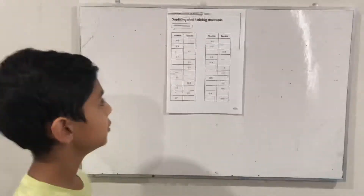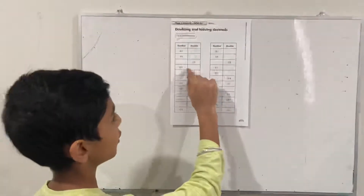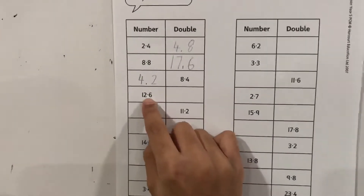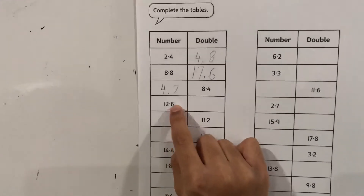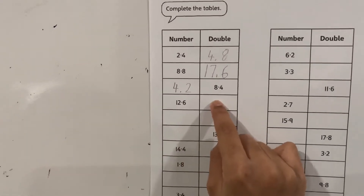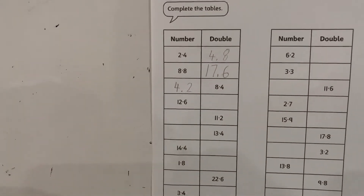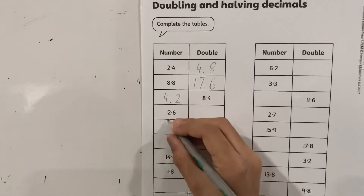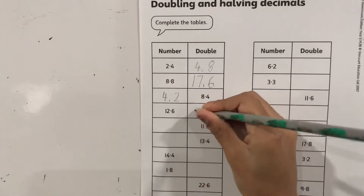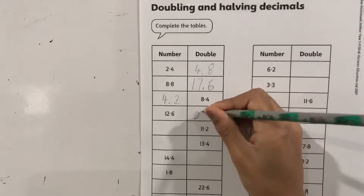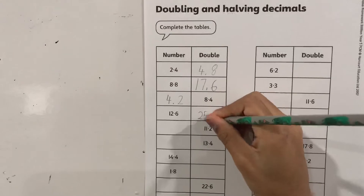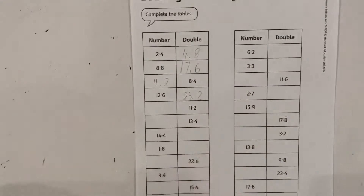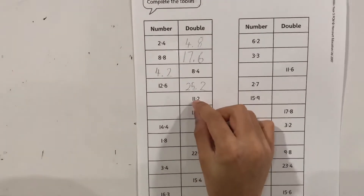You can also solve these questions by just straightaway multiplying the number by 2. So 4.3 doubled is 8.6, and if we double 12.6 it is 25.2.